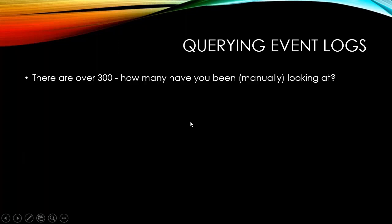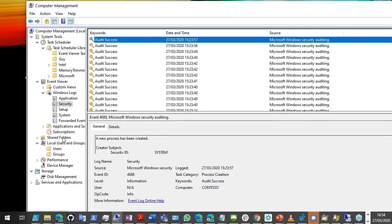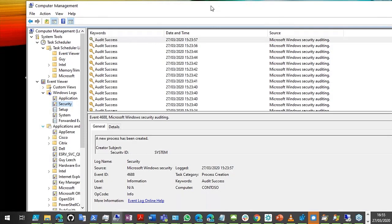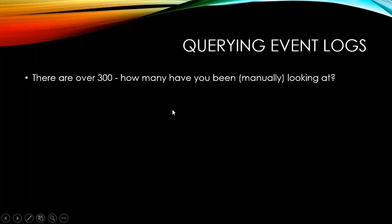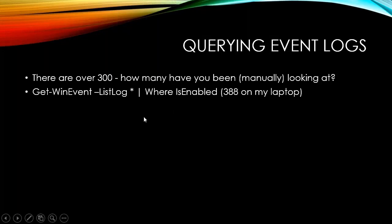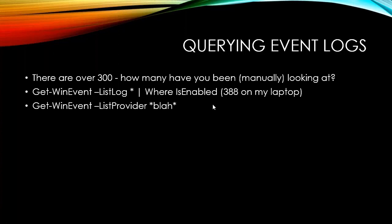Moving on to event logs. Of course we have over 300 event logs, so rather than just looking at Application and System, if we're looking for a problem or hints as to why a logon might be slow, we've got a lot of event logs to go through. In the Applications and Services section alone there are typically 300-plus — yesterday I counted 389.